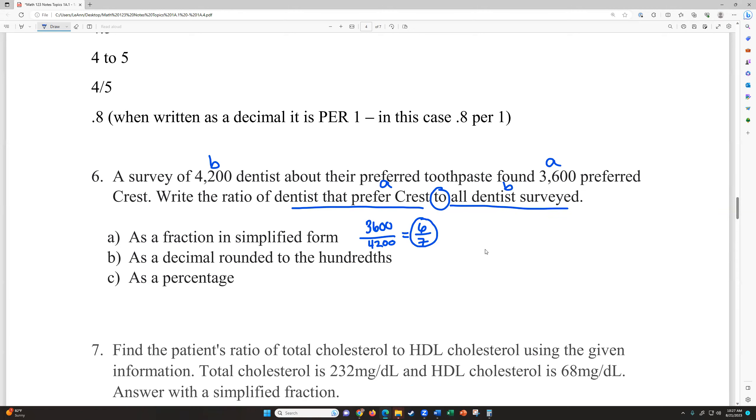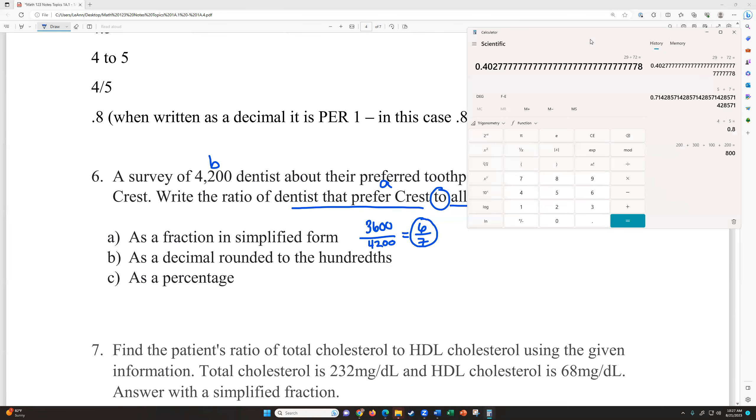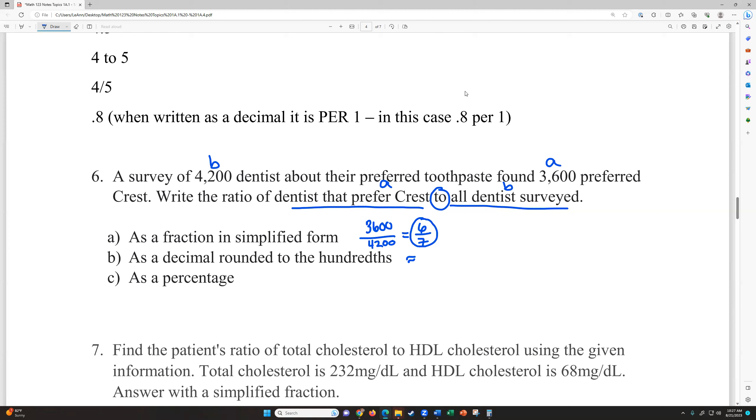We want to now write it as a decimal rounded to the nearest hundredth. So I need to actually use my divide button on my calculator so I can show this one. So we have 6 divided by 7. Notice that goes on for a long ways. We're going to the hundredth place, that's the second decimal. So there's a 5 in that spot and a 7 behind it. So this is going to round up to 0.86. And then as a percentage, we're going to base that off of this answer. So it's approximately, move the decimal two places to the right, add the percent sign, 86%.